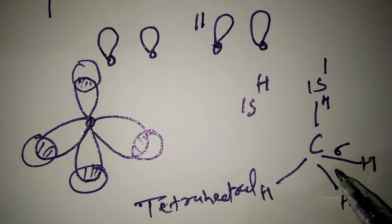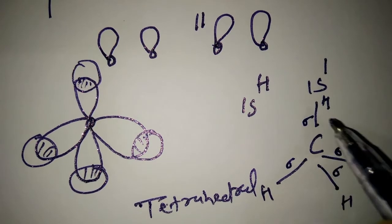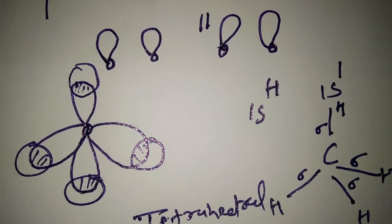Sigma bonds. How many sigma bonds form? Four sigma bonds are formed.